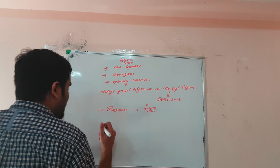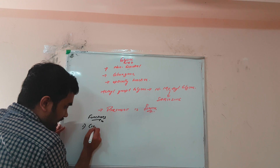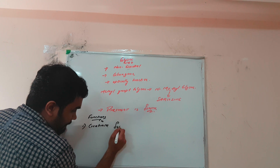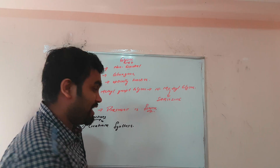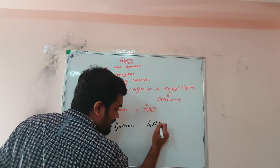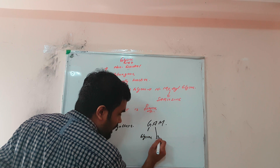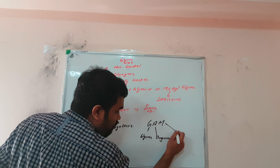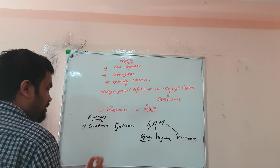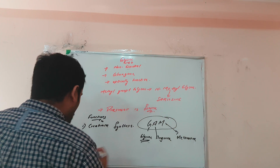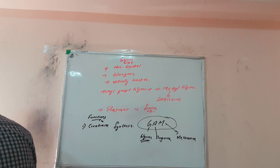Now we will study the important functions of glycine. The first main function is creatinine synthesis. You can remember this with a mnemonic. Creatinine is formed from three amino acids: glycine, arginine, and methionine.